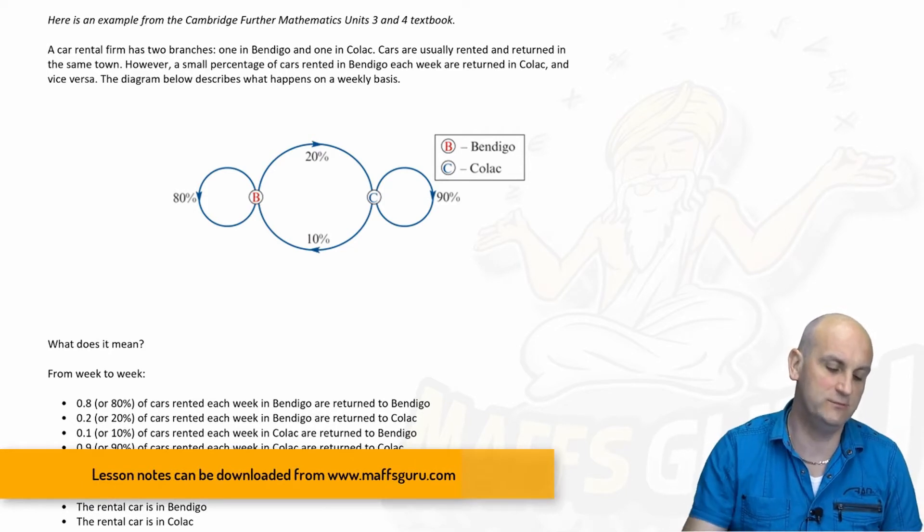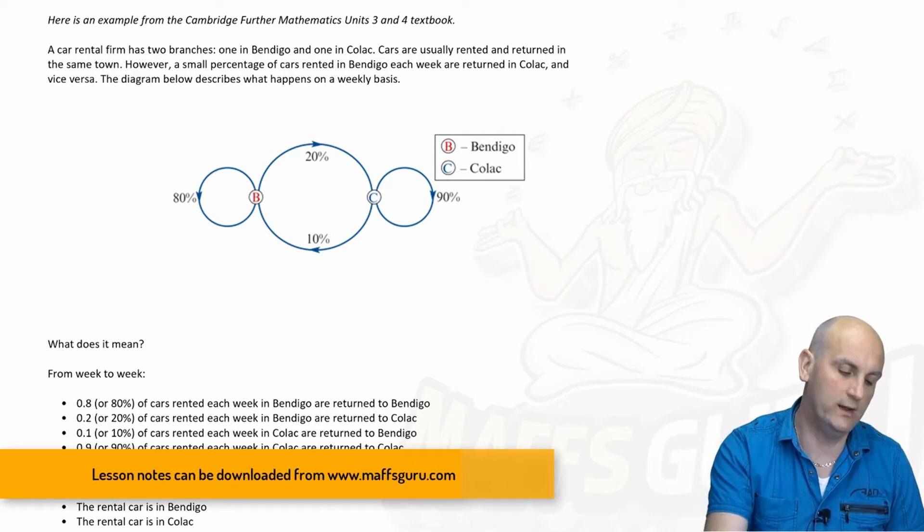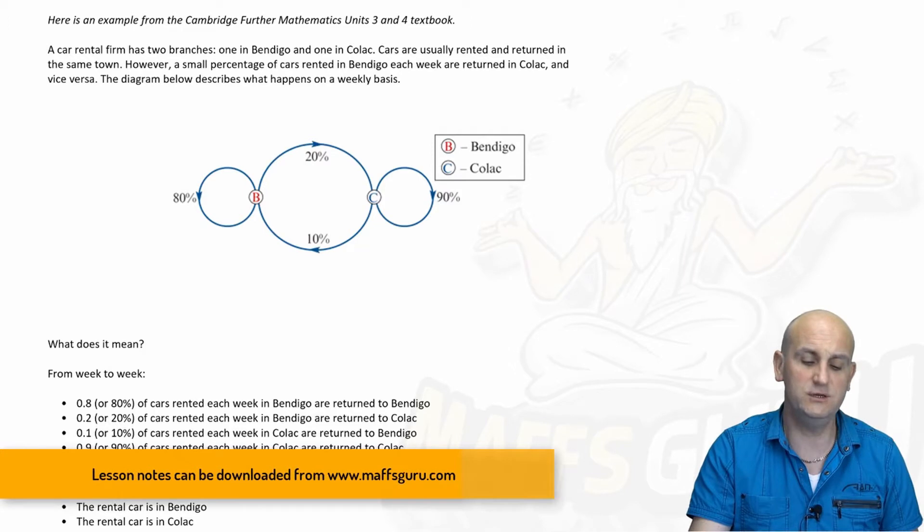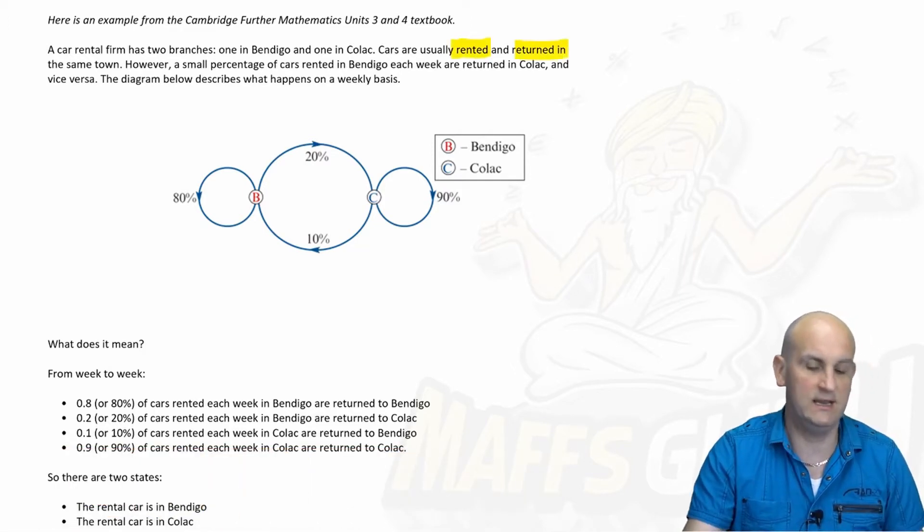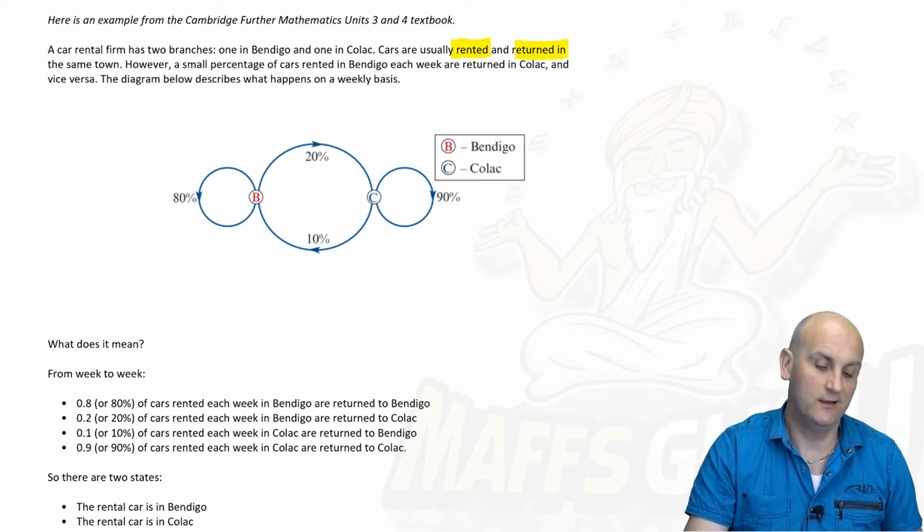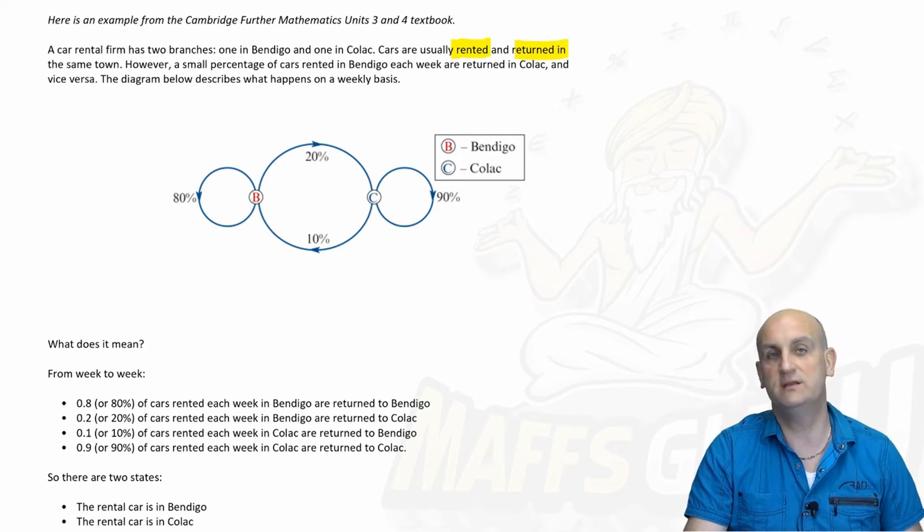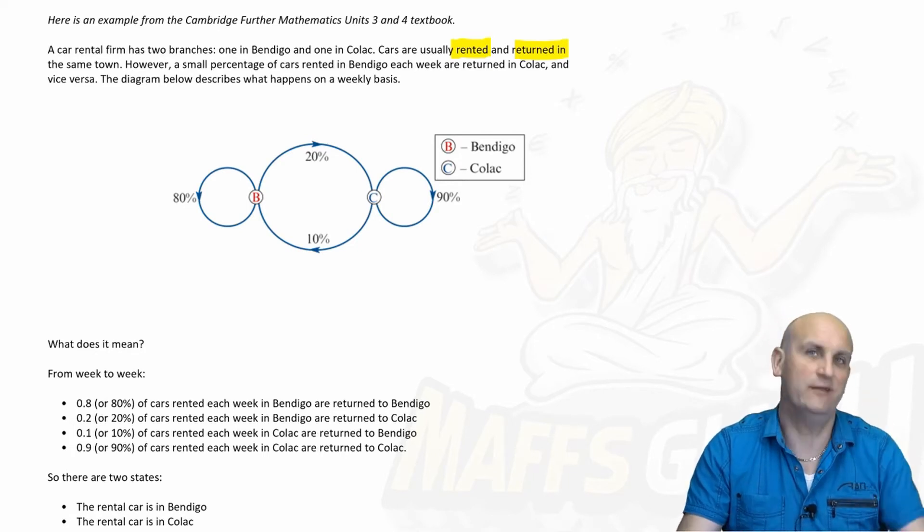A car rental firm has two branches, one in Bendigo and one in Colac. Cars are usually rented in and returned in the same town. Now that's really important, rented in and returned in the same town. However, a small percentage of cars rented in Bendigo each week are returned in Colac and vice versa. So that makes sense.